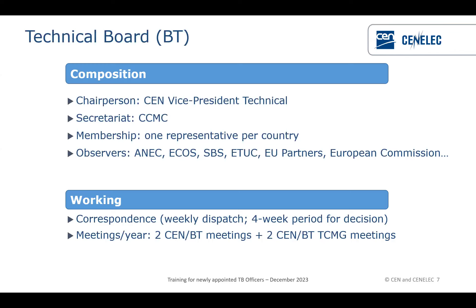Usually the technical board takes decisions by correspondence. Every week your BT member gets a set of decisions to be approved, and normally they have four weeks to reply. This allows progress in the development of the organization. Of course, there are also face-to-face meetings — two main plenary meetings, called CEN-BT meetings, happening twice a year. In the meantime, to resolve issues raised during decision by correspondence, there are meetings of the CEN-BT TCMG — the TC management group — a substructure of the BT to resolve problems between two main sessions.